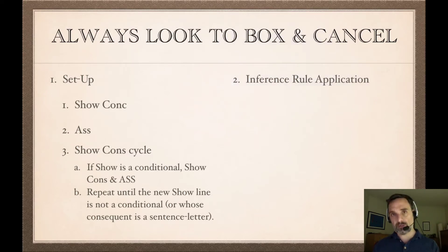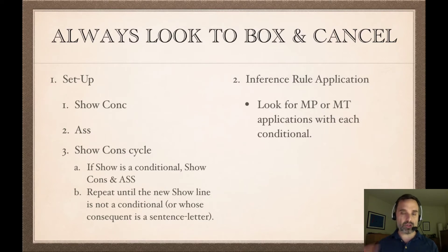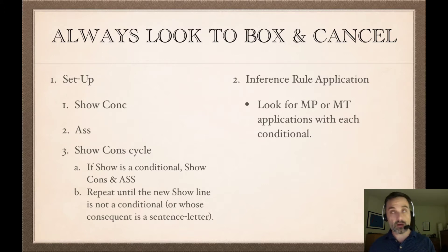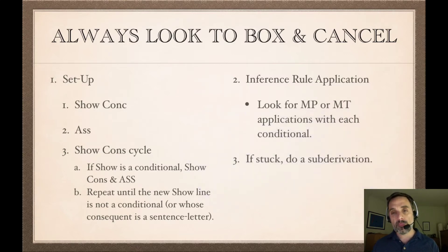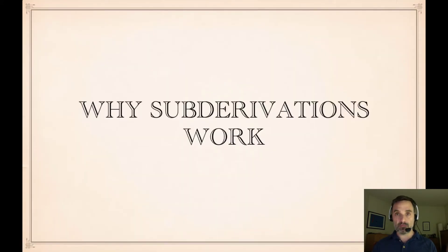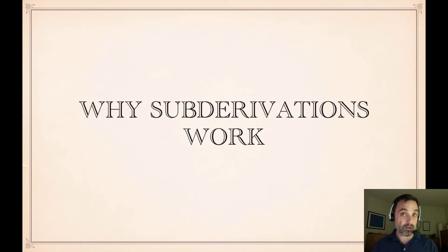The second stage is inference rule application. We're particularly interested in modus ponens or modus tollens applications with each of our conditionals. Once you've done modus ponens or modus tollens with a conditional, you've used it up and won't need to use it again as the conditional premise. Then if you're stuck, you do a sub-derivation — show consequent, or show un-neg for indirect derivation, or show ant or show un-neg if you have an unused conditional.